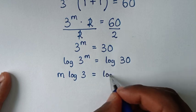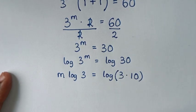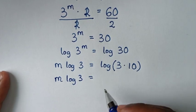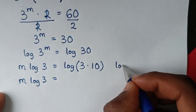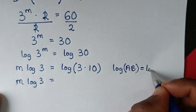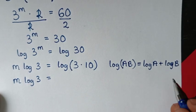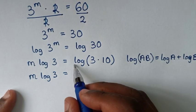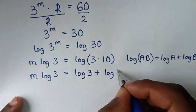Log of 30 is the same as log of 3 times 10. This is in the form of log of a product. Applying the product rule, log of 3 times 10 becomes log of 3 plus log of 10.